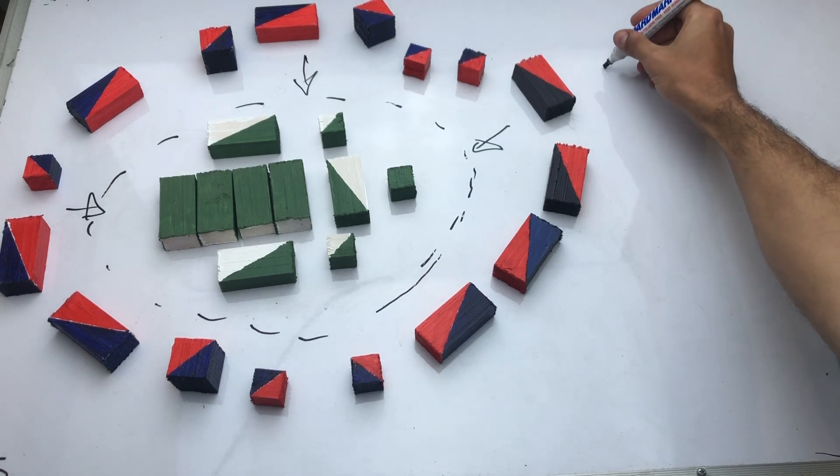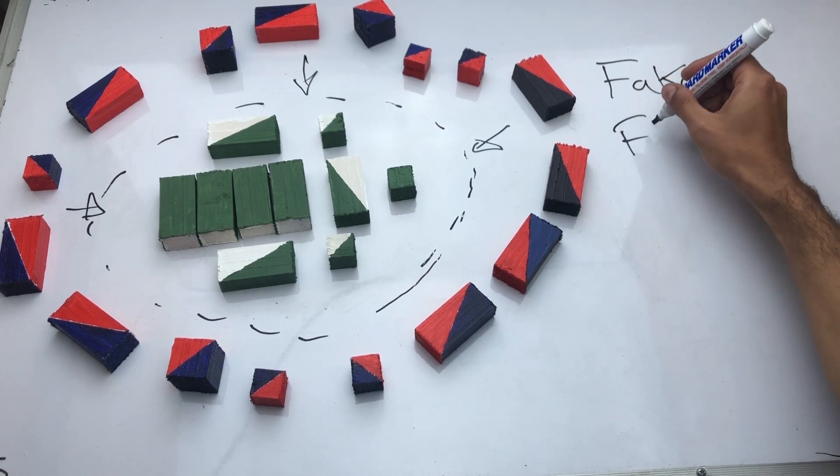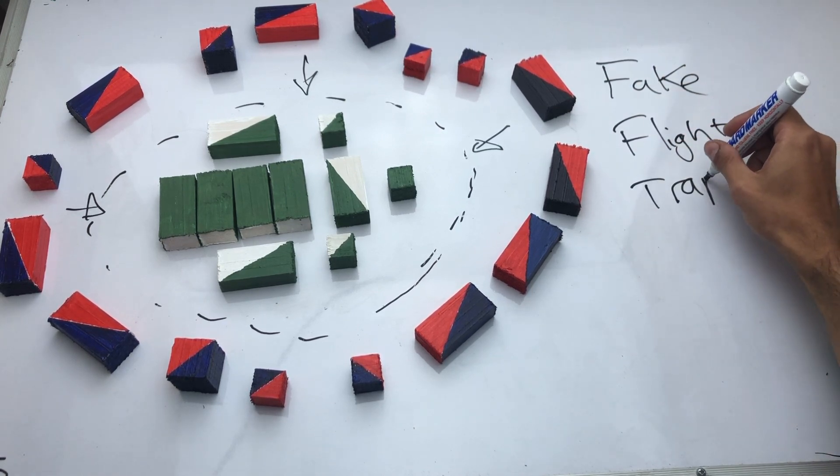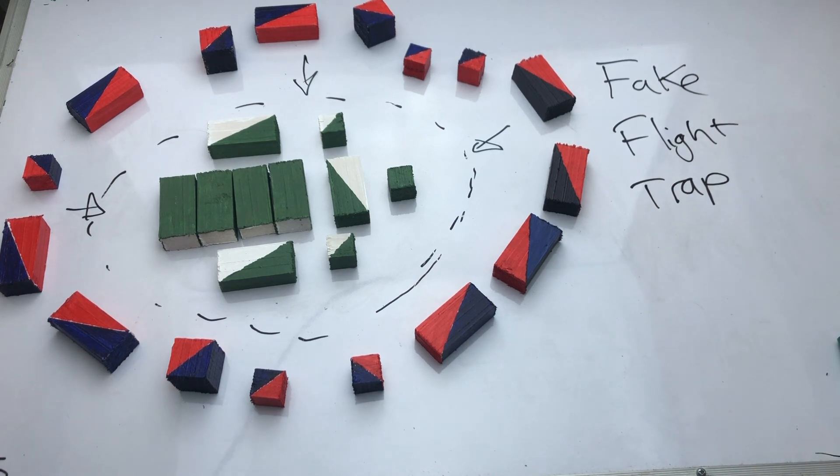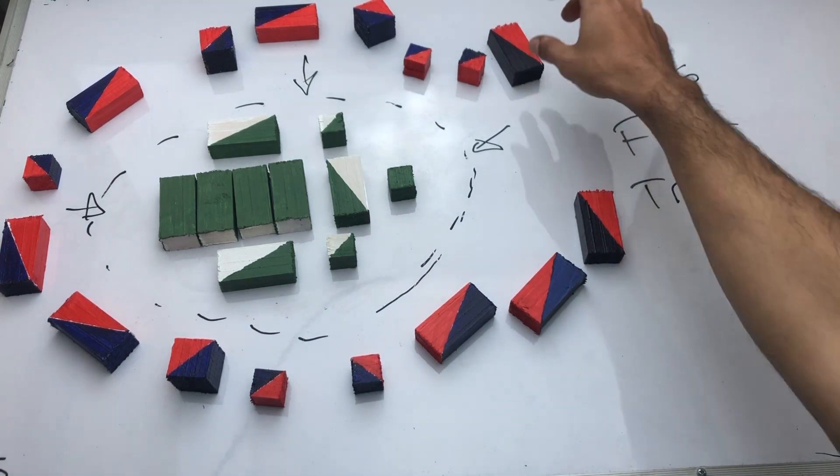They execute a fake flight trap. And what they do is they'd run this play where they'd leave a gap in their encirclement, kind of like this here.